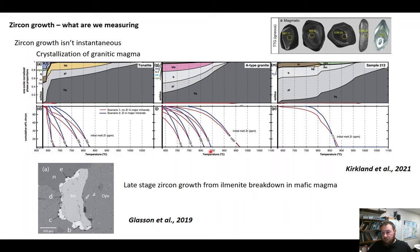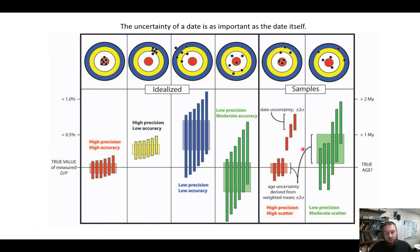We can also have late-stage growth of zircon in more mafic magmas, or in things like ilmenite that have coronas of zircon grains where the zirconium has exsolved from the ilmenite — typically a late-stage process. What I think geochronology could be heading towards is situations where we have high precision but are able to understand these outliers better, as they may reflect prolonged zircon growth or other geological processes.